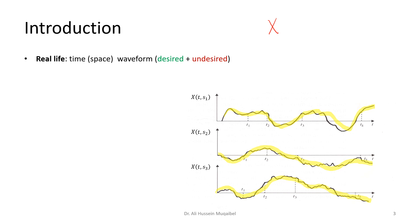We can think of our random process as capital X, representing the random process, with two variables: t for time, and the sample we pick — student number one, number two, number three, and so on. There are many things in real life which need to be represented as a function of time, or even function of space. We'll focus more on time, but it's the same concept — in images or videos you also need to look at space. We will consider time signals which vary as a function of time.